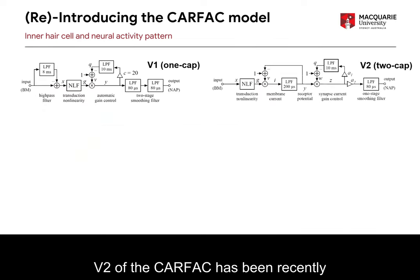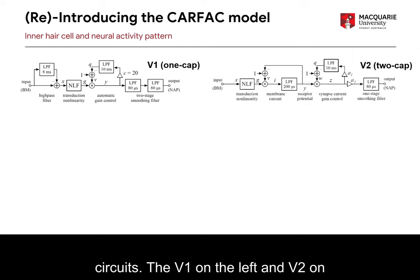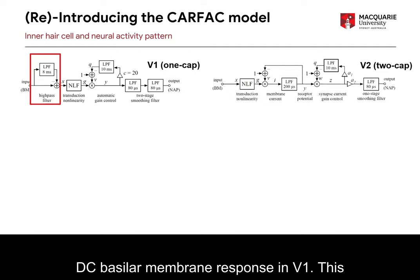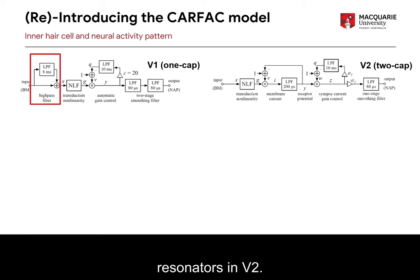Version 2 of the CARFAC has been recently published and it differs from version 1 in several ways, but especially in the inner hair cell stages, represented as circuits for version 1 on the left and version 2 on the right. The first difference is the lack of a high-pass filter that helped to remove the DC basilar membrane response in version 1. This has been folded back into the cascade of resonators in version 2.